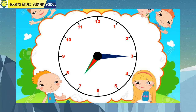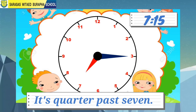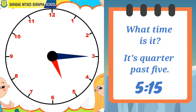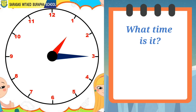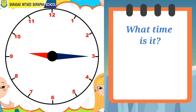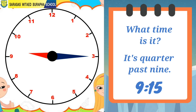The hour hand has passed 7, and the minute hand is pointing on 3. The time is 7:15, or a quarter past 7. Can you tell what time it is? Did you say 5:15, or quarter past 5? Then you are correct. How about this? Did you say 1:15, or quarter past 1? That's right. And now — did you say 9:15, or quarter past 9? Nice work.